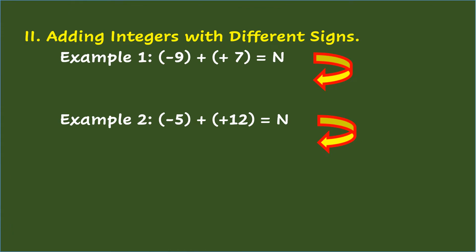Adding integers with different signs. Example 1: Negative 9 plus positive 7 equals n. If the integers you are adding have different signs, subtract the smaller absolute value from the larger absolute value. So 9 (for negative 9) minus 7 (for positive 7) is 2. Then affix the sign of the greater number to the sum. The greater number is 9 with a negative sign. So negative 9 plus positive 7 equals negative 2.